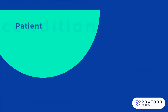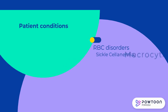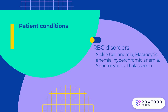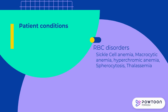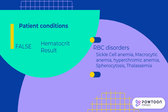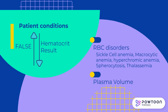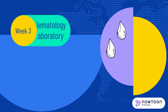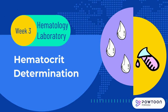Disorders such as sickle cell anemia, macrocytic anemia, hyperchromic anemia, spherocytosis, and thalassemia may cause plasma to be trapped in the red blood cell layer, causing an increased value. Patient plasma volume changes can also affect hematocrit readings: blood loss may give a low hematocrit because plasma is replaced faster than red blood cells, while dehydration increases hematocrit due to decreased plasma volume. That ends the discussion of the different methods for hematocrit determination in the hematology laboratory.